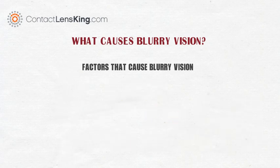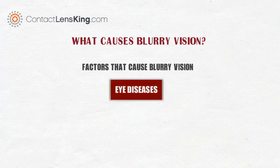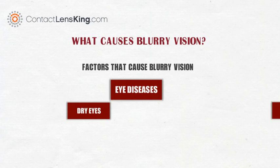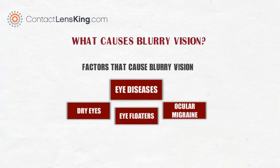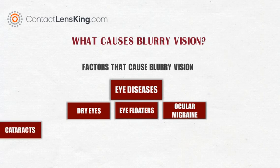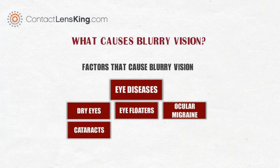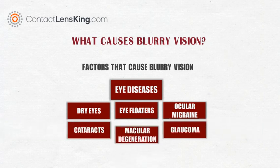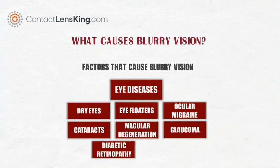Some examples of eye diseases or disorders that may result in blurry vision may include dry eyes, ocular migraine, eye floaters, cataracts, glaucoma, macular degeneration, diabetic retinopathy, and cardiovascular diseases.